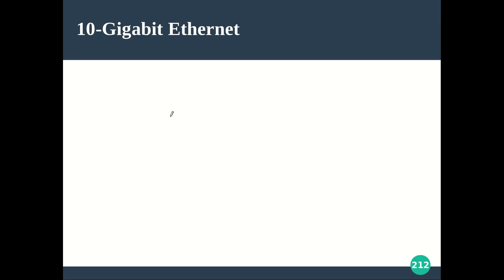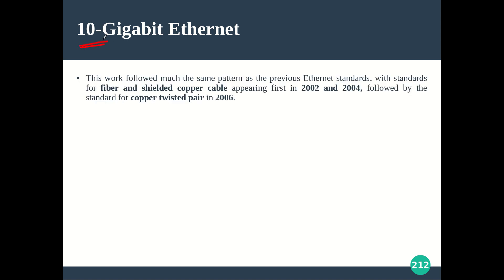The 10 Gigabit Ethernet is of course 10 times faster than gigabit Ethernet. This work followed much the same pattern as the previous Ethernet standards, with standards for fiber and shielded copper. The first category running over fiber came in 2002, and the 10 Gigabit Ethernet running over shielded copper cable came into existence by 2004.